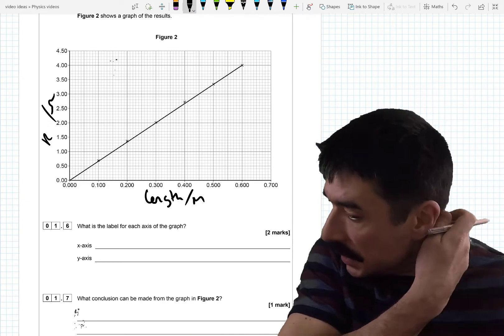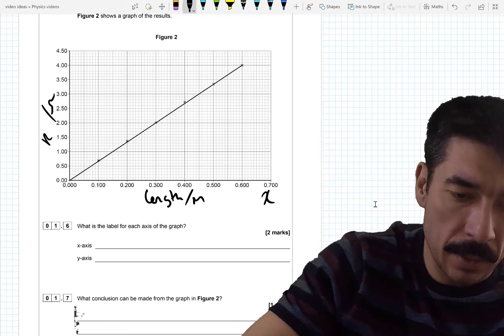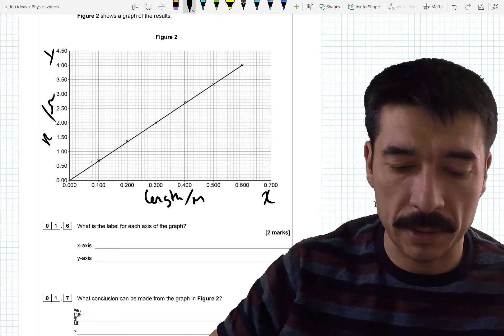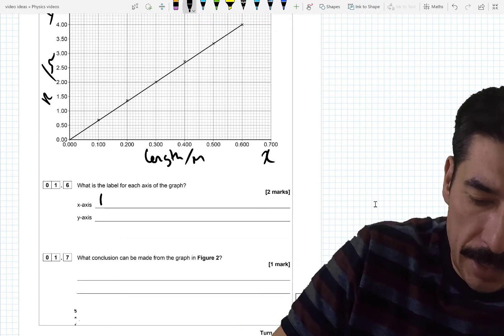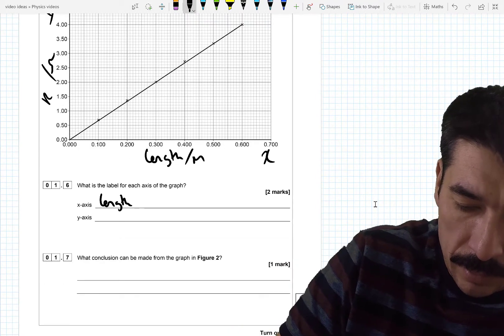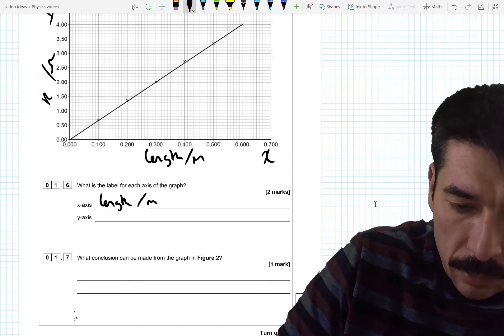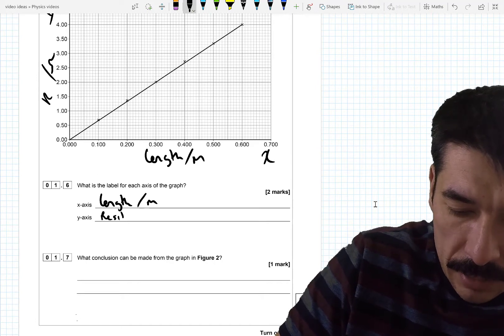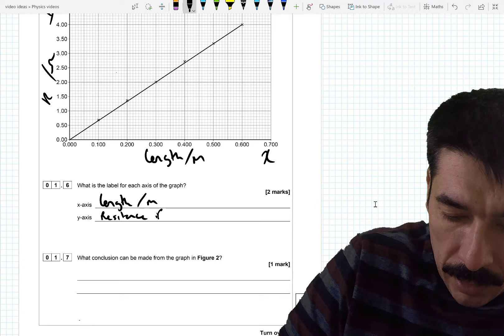So x axis along the corridor. X up the stairs. Y. That's how my math teacher taught me at school. To remember them. So x is length in meters. And y is resistance. And it's in ohms.